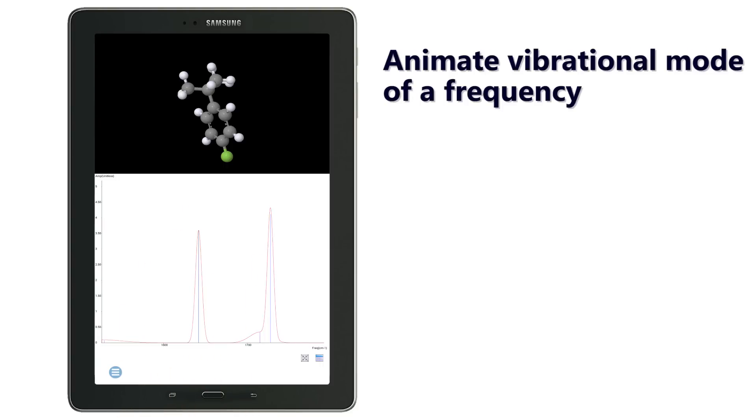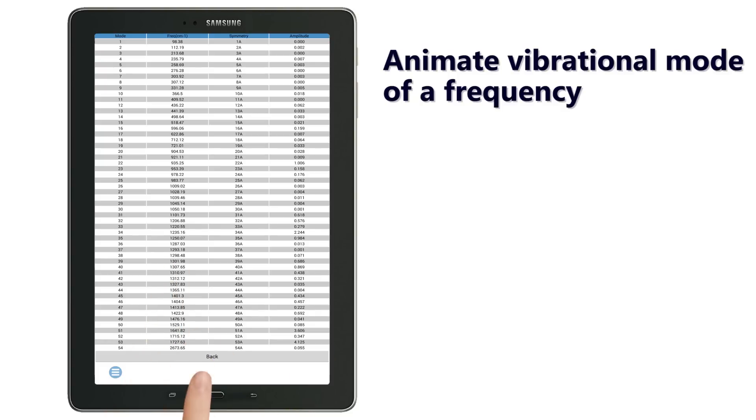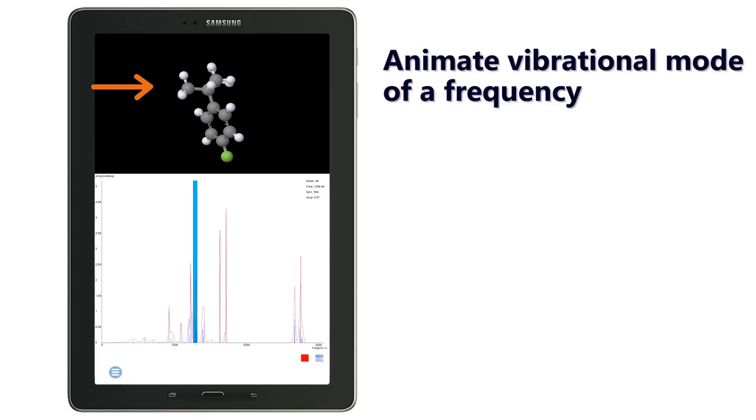Swipe across an area on the spectrum to zoom out. You can continue to do so to see all frequencies contribute to a peak clearly. Double tap on a frequency to animate its vibrational mode. You can tap on the table to view all frequencies. Select one to view its vibrational mode.